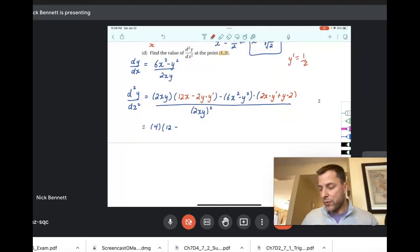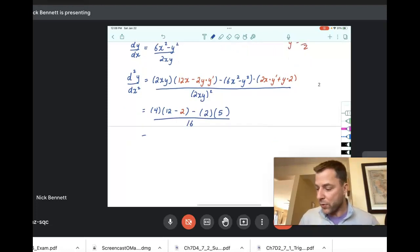So 2 times 2 is 4. Times 1 half is just 2. Minus 6 times 1, which is 6. Minus 2 squared, which is 4. 6 minus 4 is 2. Times 2x, which is 2 times 1, which is 2. 2 times 1 half is 1. 1 plus 4 is 5. All divided by 2 times 1 times 2, which is 4. 4 squared is 16. And we simplify from there, which is 40 minus 10 over 16, which ends up being 15 eighths when you simplify it.